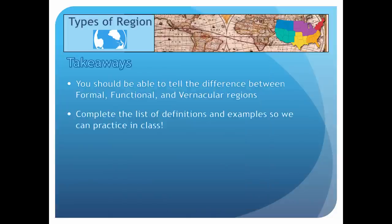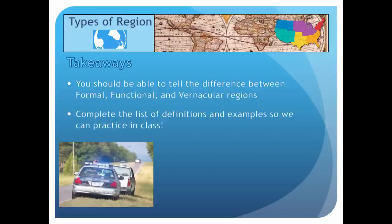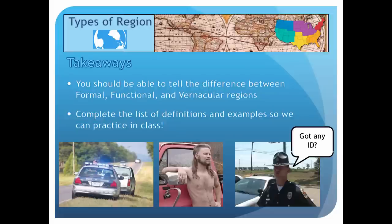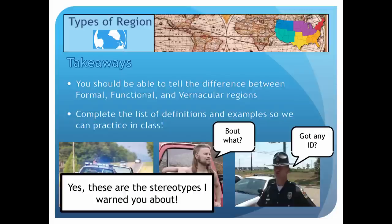Alright, so there you have it — the three types of regions. After viewing this video, you should be able to tell the difference between a formal, functional, and vernacular region, and give examples of each. And here's a regional joke: an Alabama state trooper pulls over a pickup truck on I-80 and says to the driver, 'Got any ID?' The driver thinks hard and responds, 'Idea? Idea about what?' Well, those are the kind of stereotypes I warned you about. That's all for now — until next time, explore the world around you.